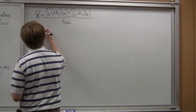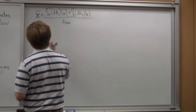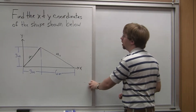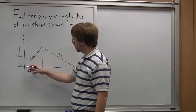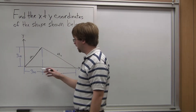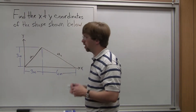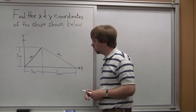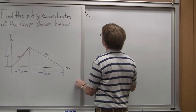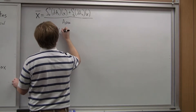Let's rewrite this. X-bar is going to be equal to the integral from 0 to 3. Let's figure out what dA1 is. The height of this triangle increases linearly between 0 and 3. The slope is going to be a rise of 3 inches over a run of 3 inches, giving a slope of 1. So dA1 is just going to be x. So we have the integral from 0 to 3 of x times x.